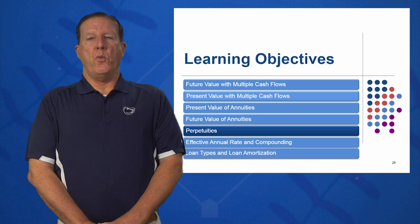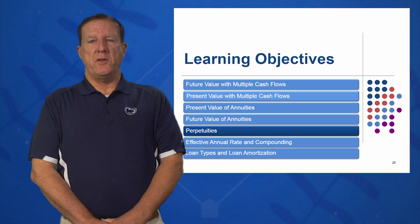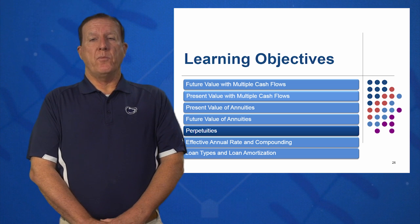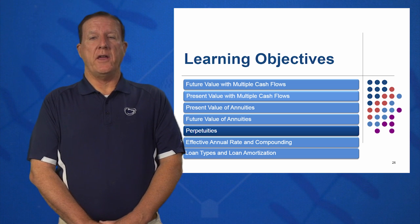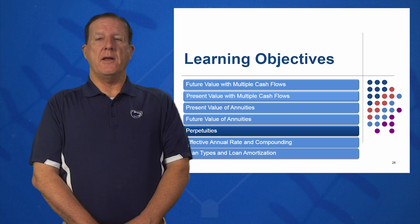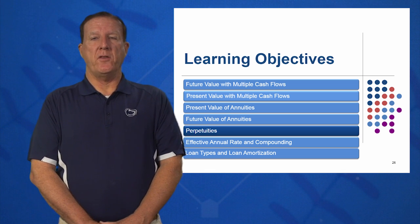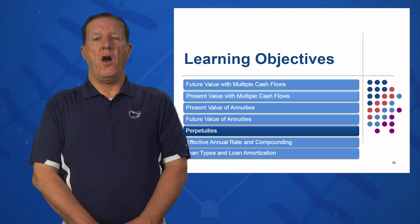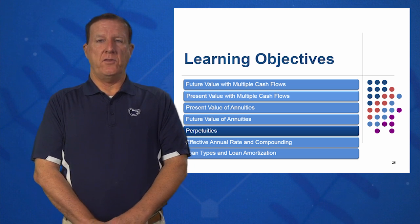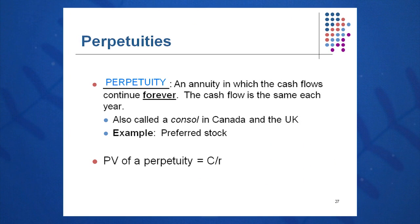In learning objective five, we ask the question: what is a perpetuity? A perpetuity is an annuity that goes on forever. We know that as T gets really, really high in the present value annuity formula, we're left with C over R. So very simply, the present value of the perpetuity is C over R. A perpetuity is an annuity where the cash flow continues forever — the same amount each year.